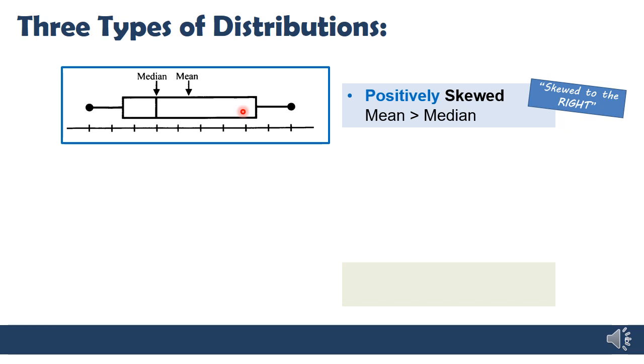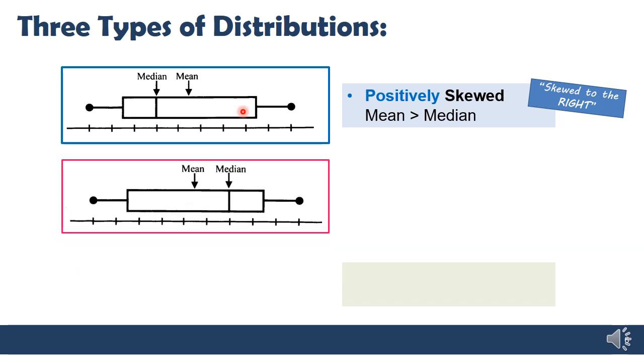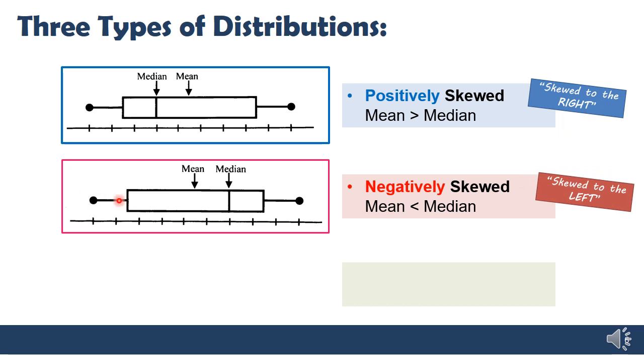So there are three types of distributions depending where the mean and the median are. We just spoke about when the mean is greater than the median. We call this positively skewed. And another way of saying this that I don't think you've learned yet is we say this is skewed to the right, meaning there's some high value on the right that's pulling in the positive direction, pulling the mean upwards. We then have the opposite situation where the mean is now less than the median. In this case, there's some low value that's pulling the mean downwards. So we say that this is negatively skewed or skewed to the left. There's some value here on the left that's pulling the mean in the negative direction.